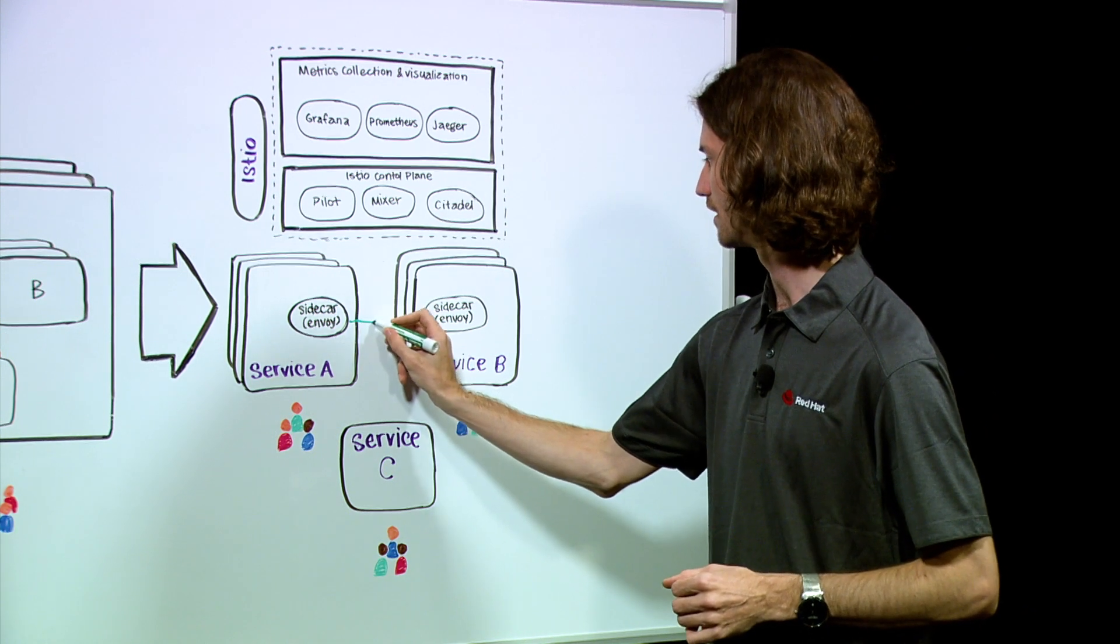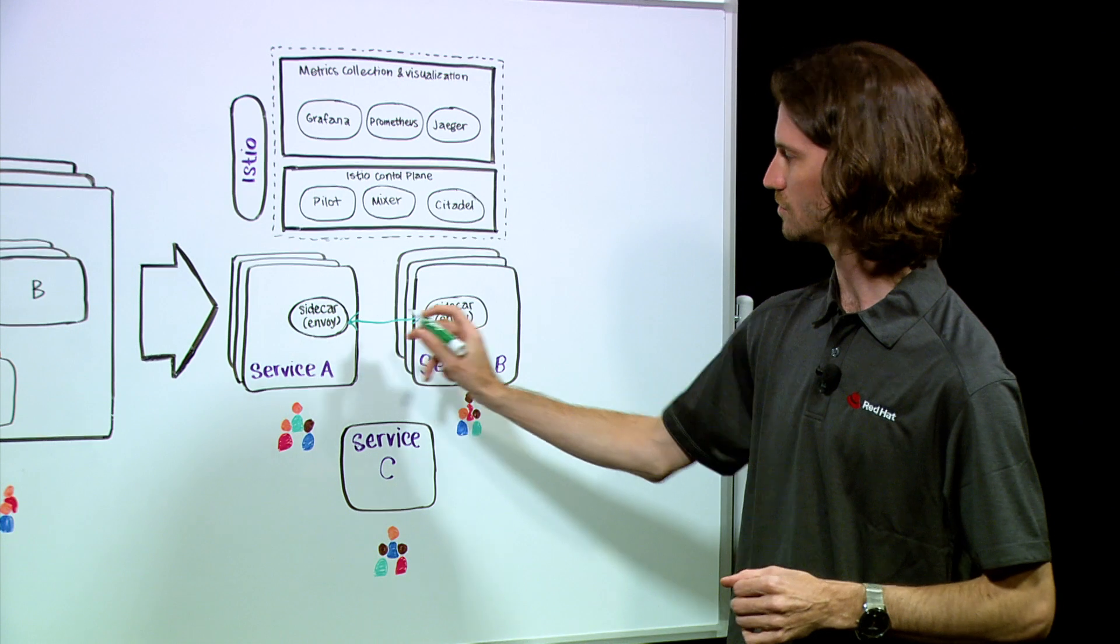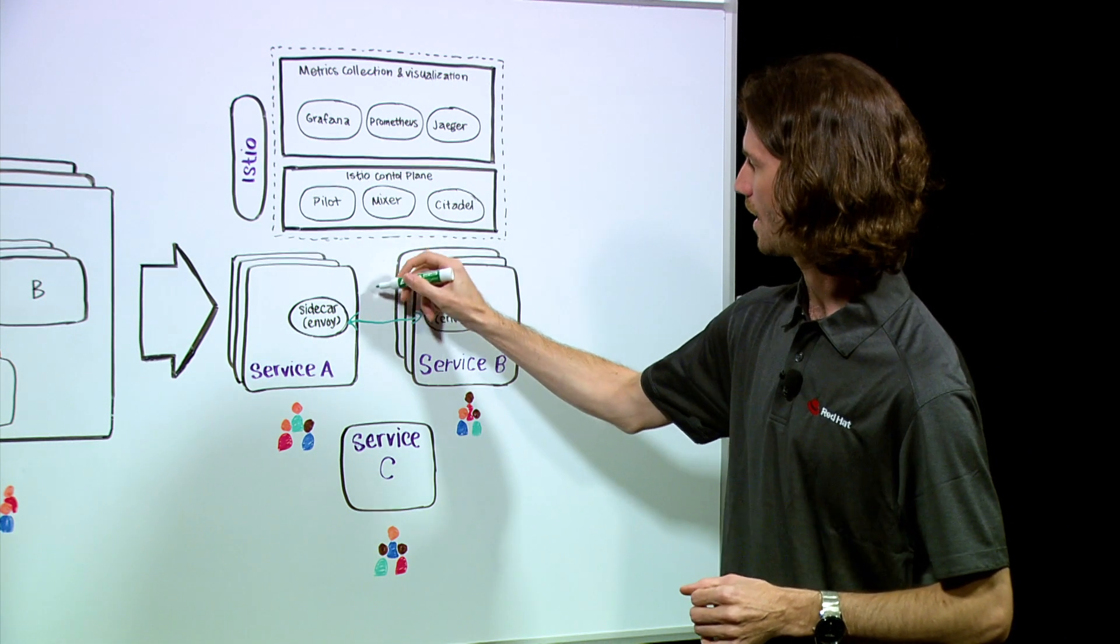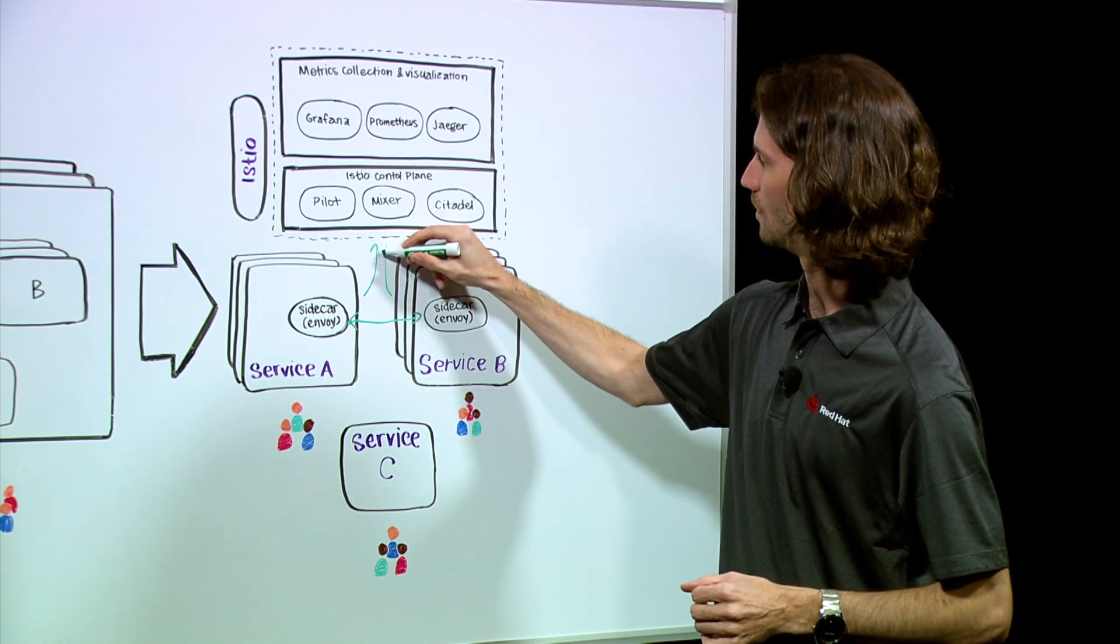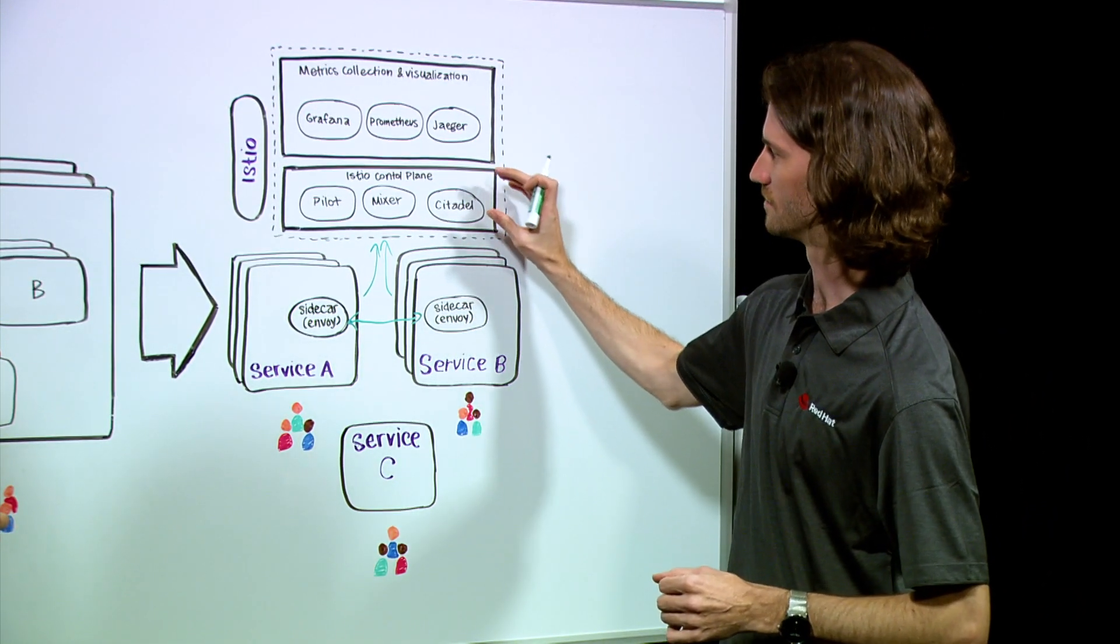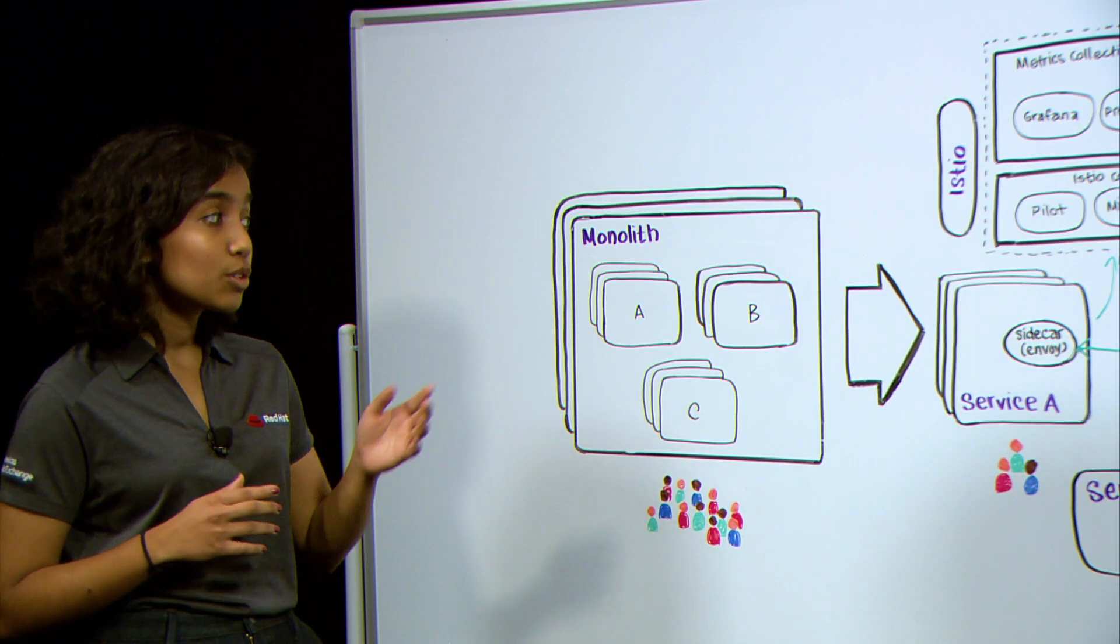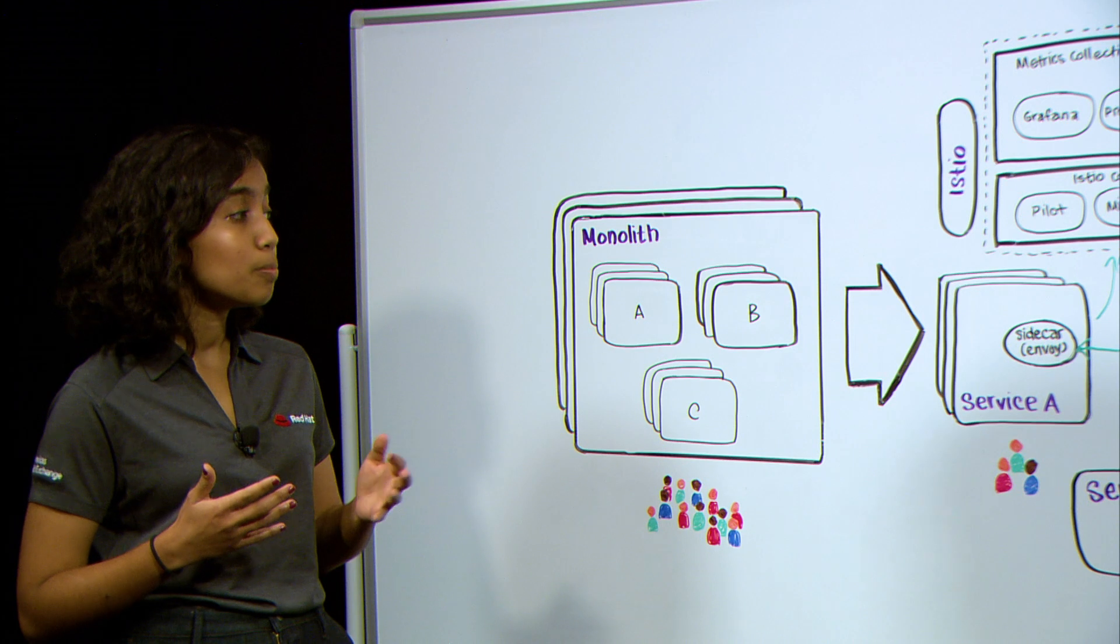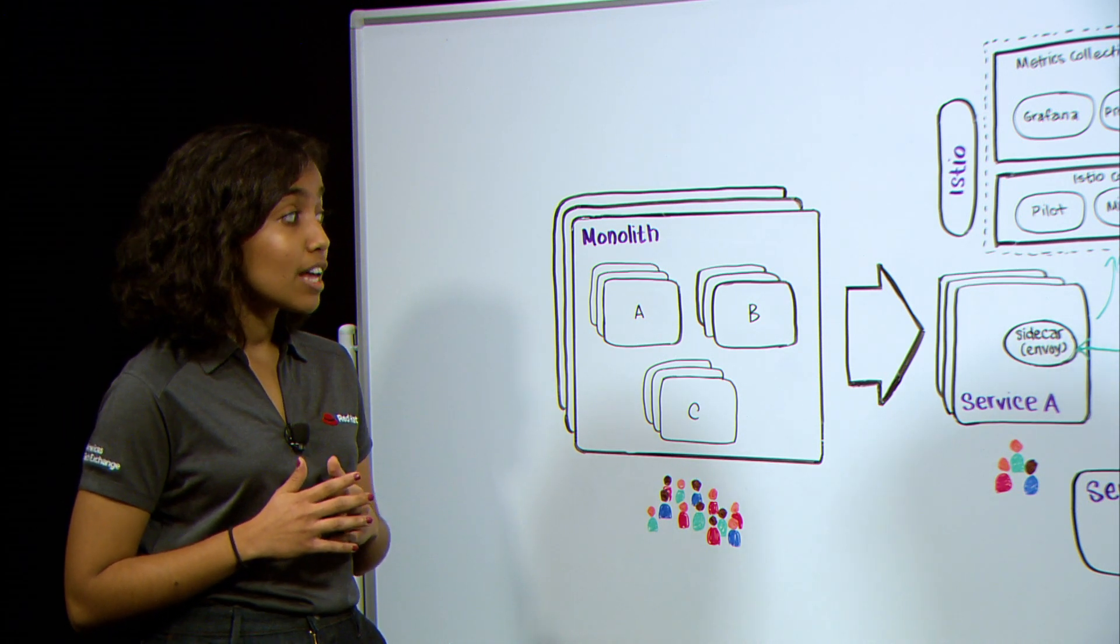And actually, the traffic, the service-to-service traffic is actually moving through these sidecar containers, right? And these containers are communicating with the Istio control plane to get configuration. So you have this central point of control there. I see. Istio does seem like it's going to meet all those requirements and give us all the capabilities that we need. That is awesome.